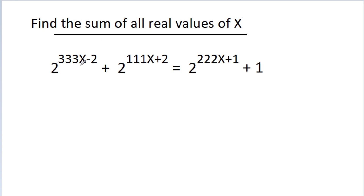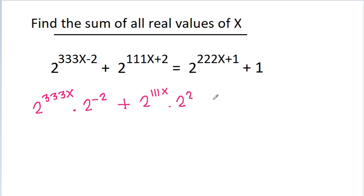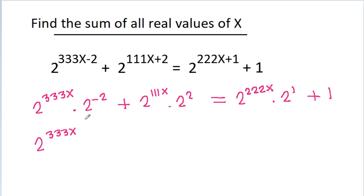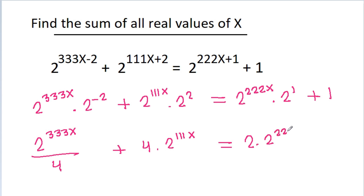So 2 power (333x minus 2) will be 2 power 333x times 2 power minus 2, plus 2 power 100 ln(x minus 2) will be 2 power 111x times 2 power 2. That is equal to 2 power (222x minus 1), which is 2 power 222x times 2 power 1 minus 1. And 2 power 333x times 1/4 minus 4 times 2 power 111x is equal to 2 times 2 power 222x minus 1.